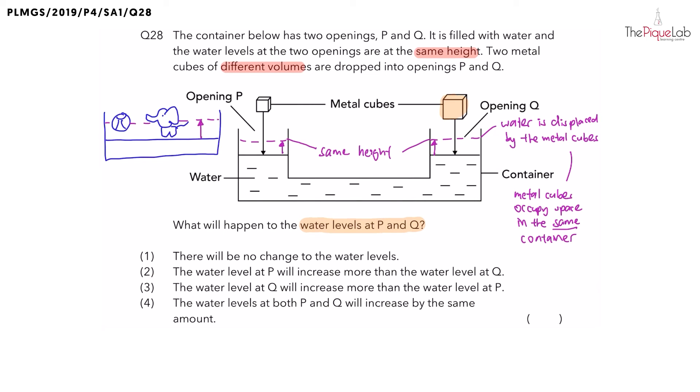To answer the question, what will happen to the water levels at P and Q, we know that the water level is going to increase to the same height. So, when we look at the options, we know that the correct answer should be option 4.